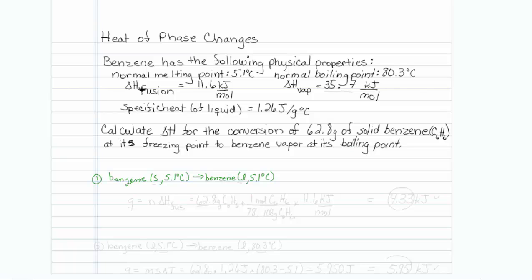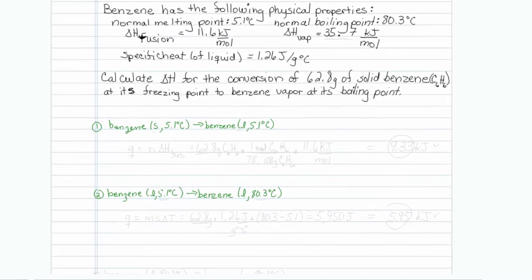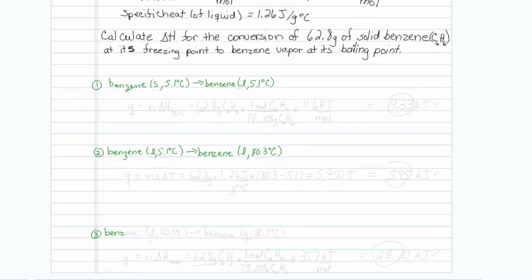Then we need to think about — now we have benzene as a liquid at 5.1 degrees Celsius, but we need to get it to its boiling point. So the benzene will still be liquid, but now at its boiling point of 80.3 degrees Celsius. That's the second step. The third step would be to convert our liquid to vapor: benzene as a liquid at 80.3 degrees Celsius going to benzene as a vapor at 80.3 degrees Celsius.